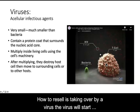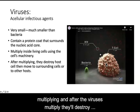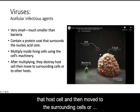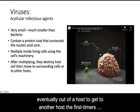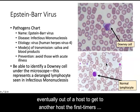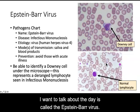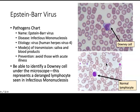After a cell is taken over by a virus, the virus will start multiplying. And after the virus has multiplied, they'll destroy that host cell, and then move to the surrounding cells, or eventually out of the host to get to another host. The first virus I want to talk about today is called the Epstein-Barr virus.